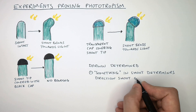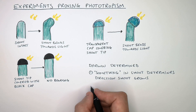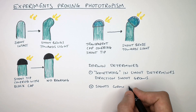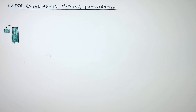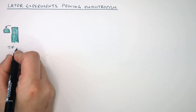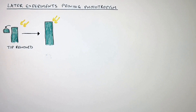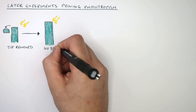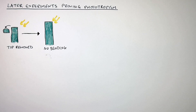Darwin determined that something in the shoot determines the direction that the shoot grows, and that the shoot grows towards light. In a later experiment, the tip of the shoot was removed. When a directional light source was placed next to it, the shoot just grew straight upwards without any bending towards the light. This showed that whatever was controlling the bending of the shoot existed in the tip of the shoot.